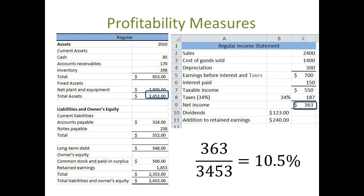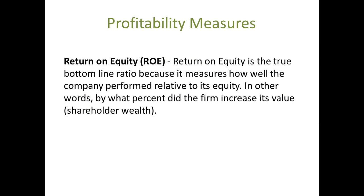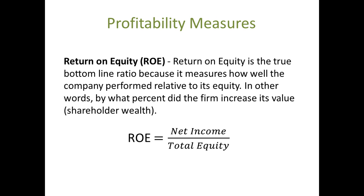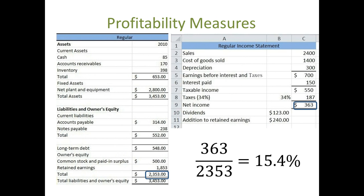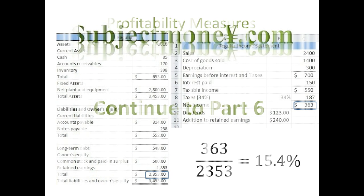Return on Equity is the true bottom-line ratio because it measures how well the company performed relative to its equity. In other words, by what percent did the firm increase its value — the shareholder's wealth? Return on Equity is usually calculated as net income divided by total equity. In our example, our net income was $363,000 and our total equity was $2.353 million, giving us a return on equity, or ROE, of 15.4%.